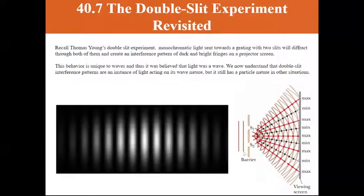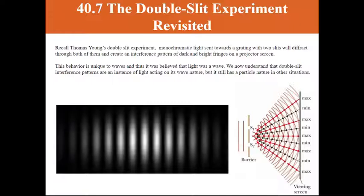Hello, everyone. The following is the fourth and final in a series of lectures covering Chapter 40. Today we'll be going over Sections 40.7, the Double Slit Experiment, and 40.8, the Heisenberg Uncertainty Principle.